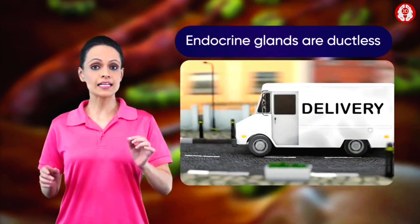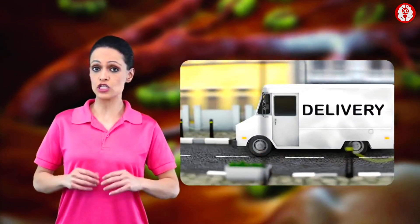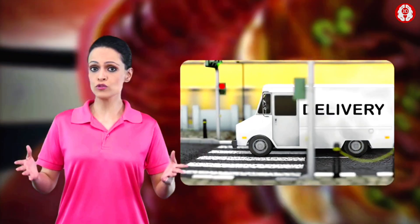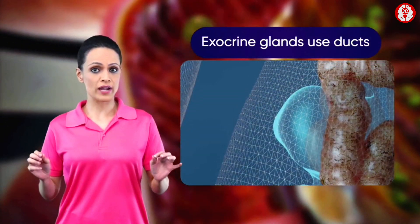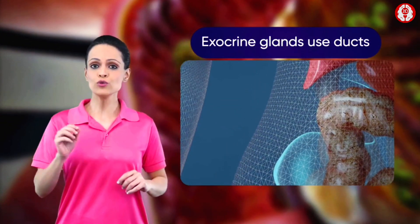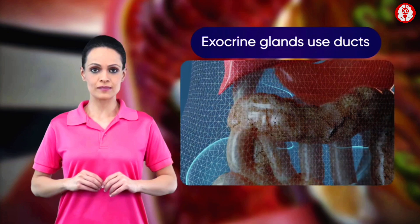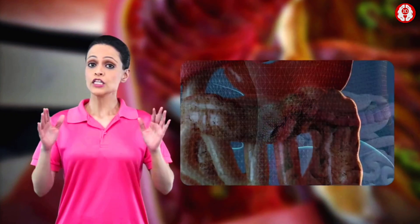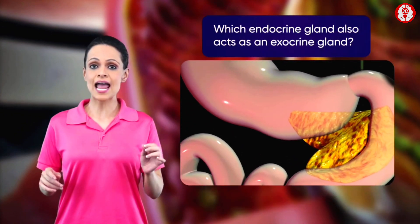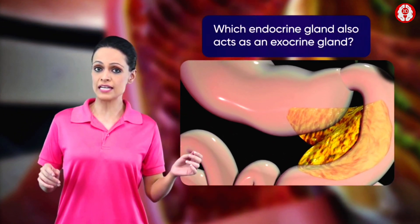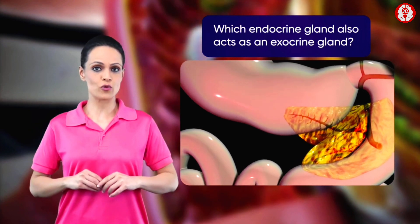Endocrine glands are ductless and deliver their messages or hormones through the bloodstream, while exocrine glands use ducts to secrete their products. The human endocrine system has a gland that acts as both an endocrine gland and an exocrine gland.